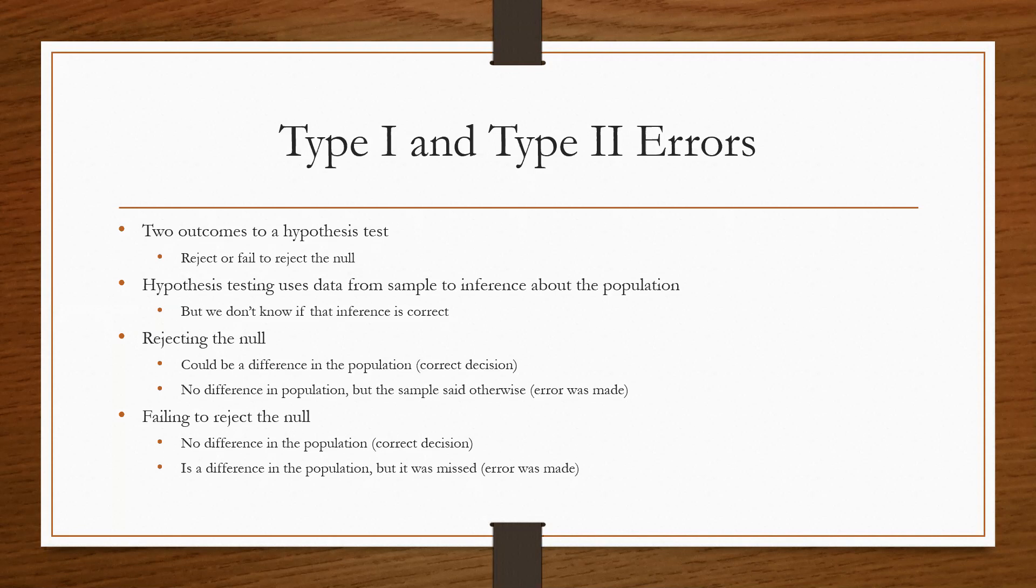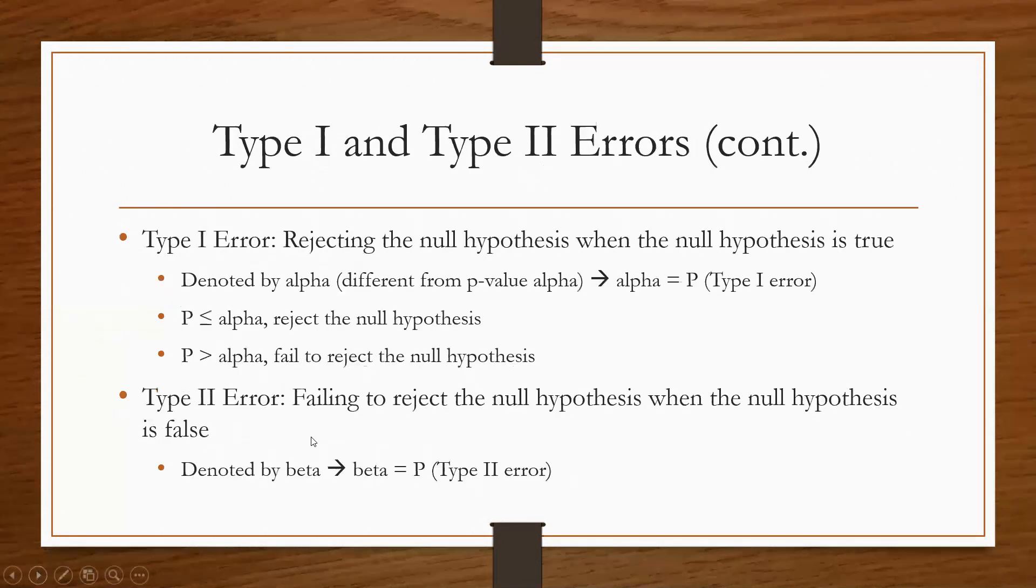It's kind of the opposite with failing to reject the null. If there is no difference in the population, then we made the correct decision by not rejecting the null. But if there is a difference in the population and we missed it and we still said that we weren't going to reject the null, then an error was made on our part.